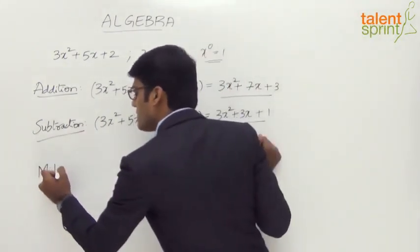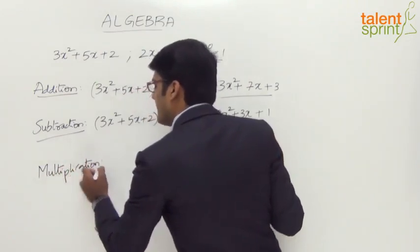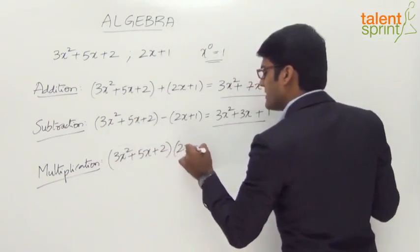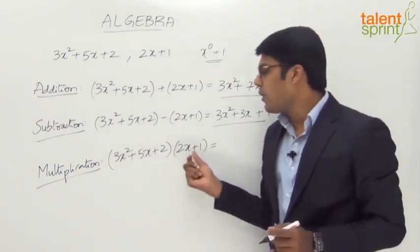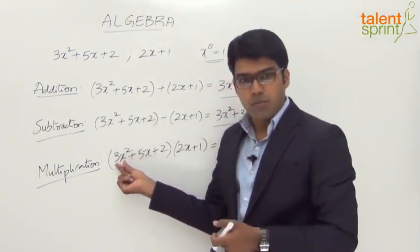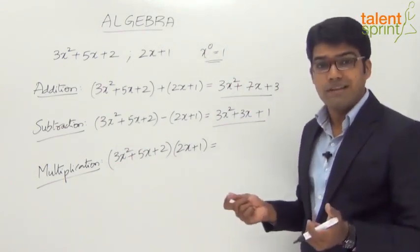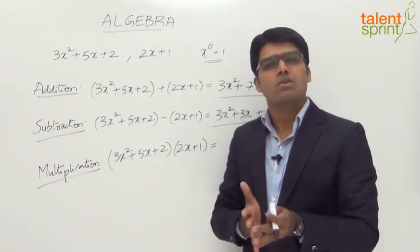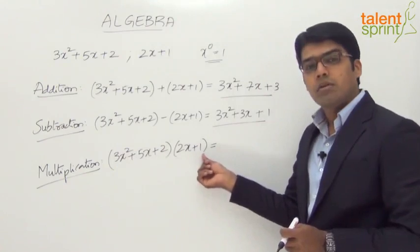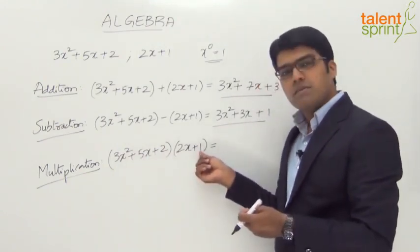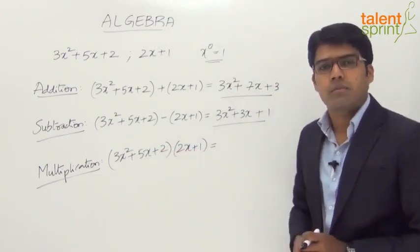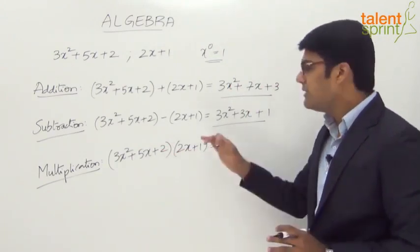Now comes multiplication — multiplication of two polynomials. Let us take the same two polynomials again: 3x squared plus 5x plus 2 multiplied by 2x plus 1. What is the product here? This is going to be different from the earlier two cases of addition and subtraction. Each term in the first polynomial has to be multiplied with each term in the second polynomial. A term is a variable, a constant, or a combination of a variable and a constant. There are three terms in the first and two terms in the second, so each term of the first polynomial gets multiplied with each term of the second polynomial.